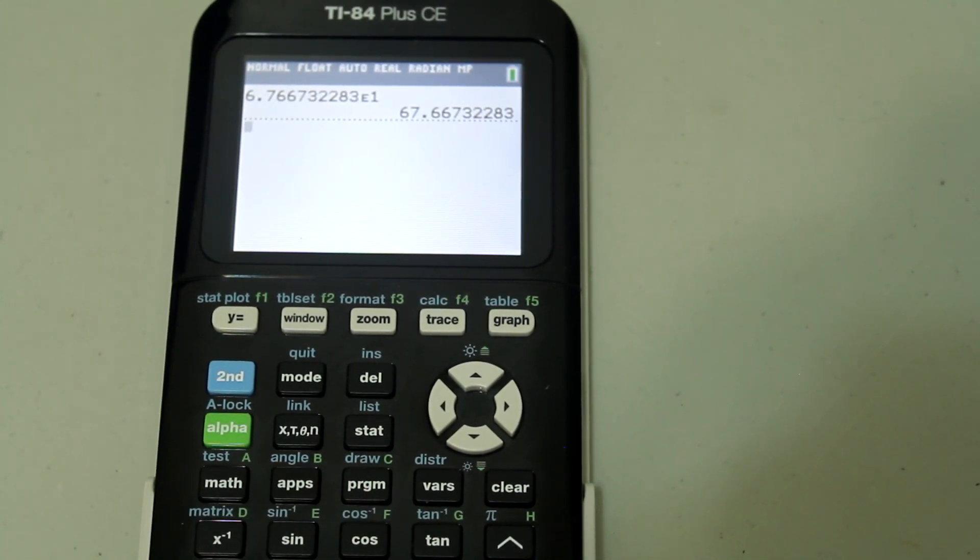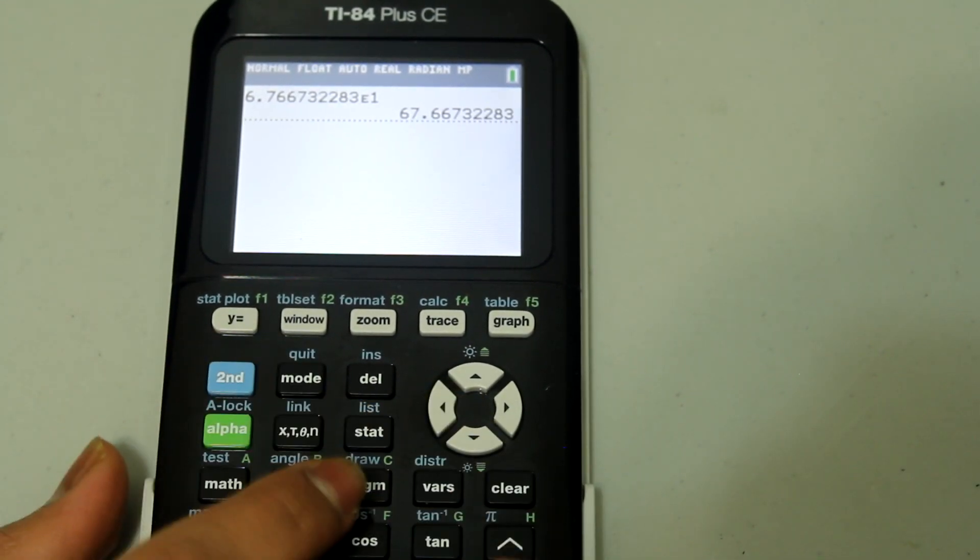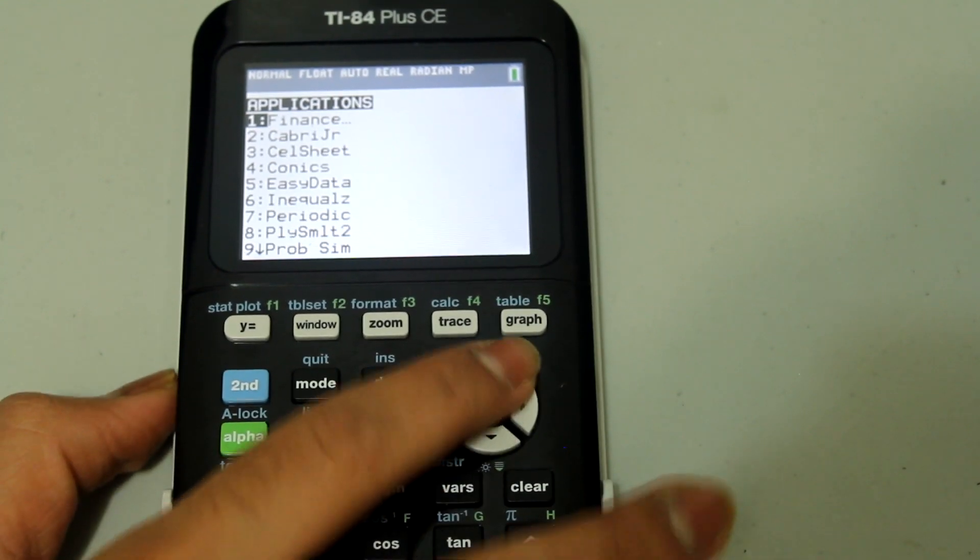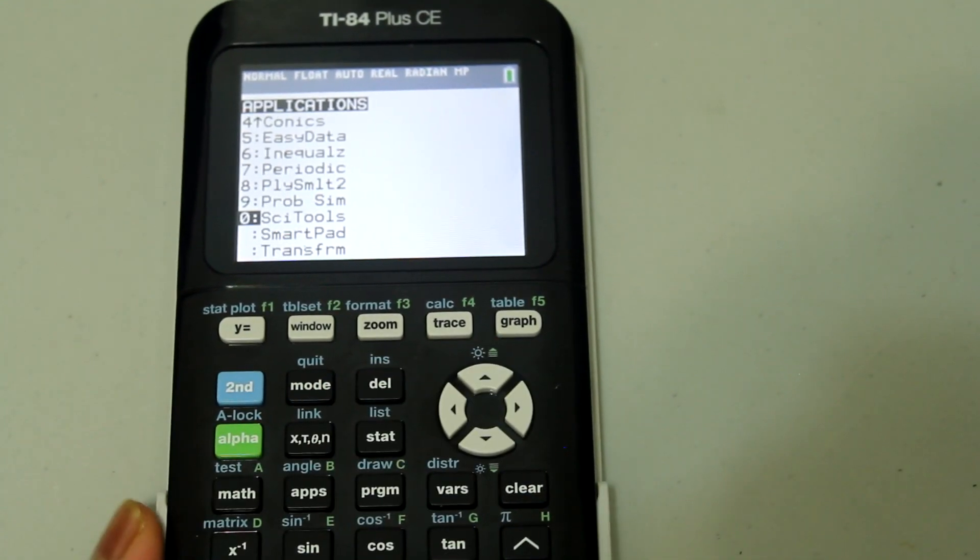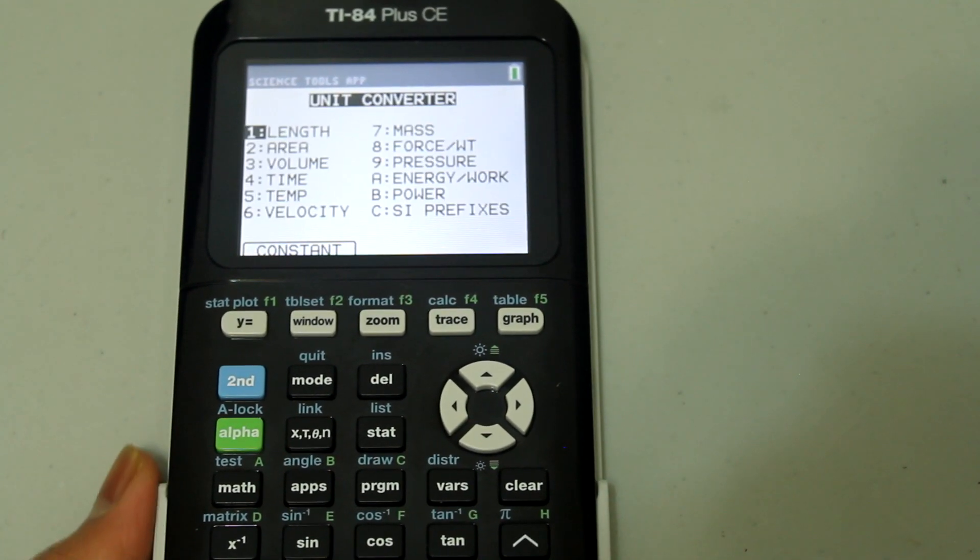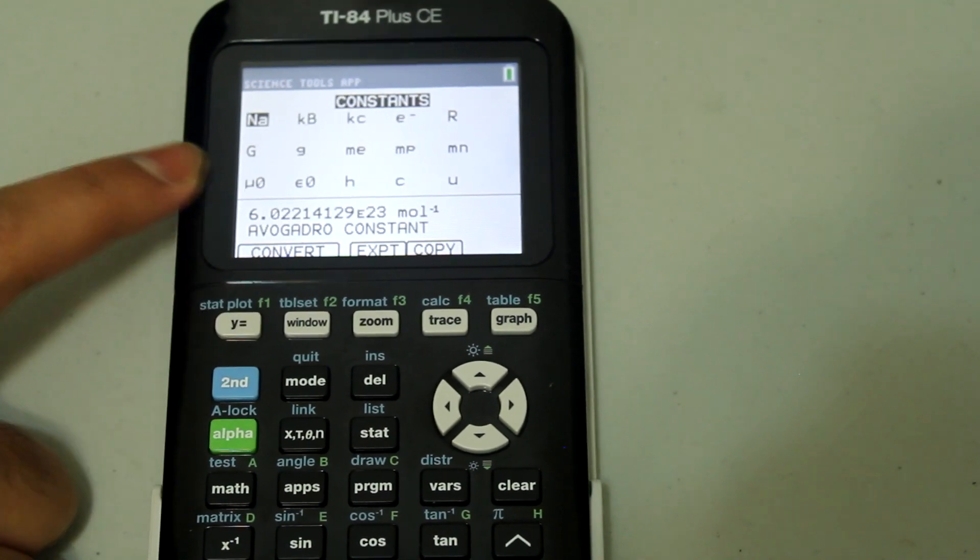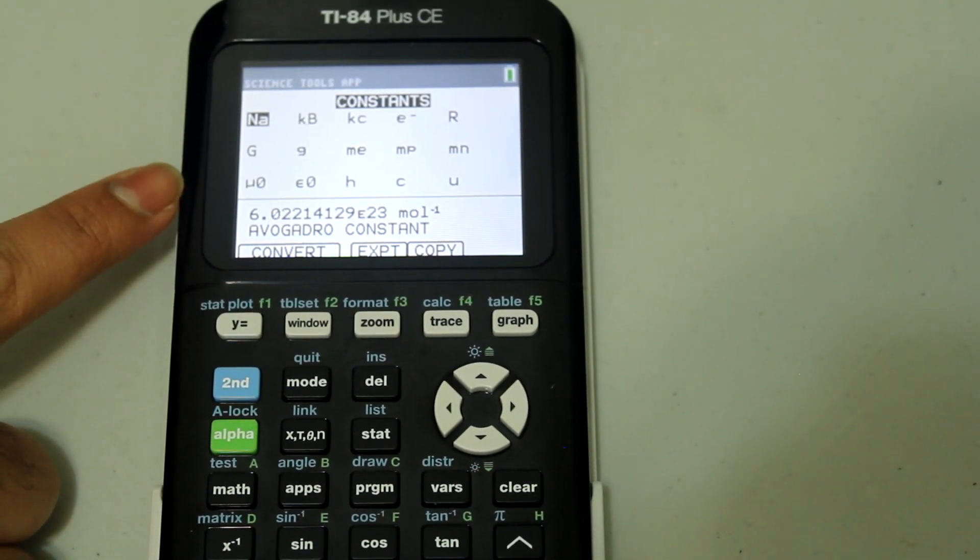And I also said that in this video, we're going to talk about how to retrieve scientific constants from the calculator. So let's go into the unit converter again. Under CONSTANT, hit the Y equals button, and now we see that there are a bunch of constants.